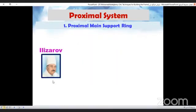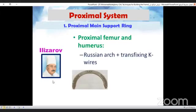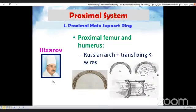So how did Elisarov solve this? Elisarov used the so-called Russian arch for both the proximal femur and the proximal humerus. He used transfixing key wires. This was risky.